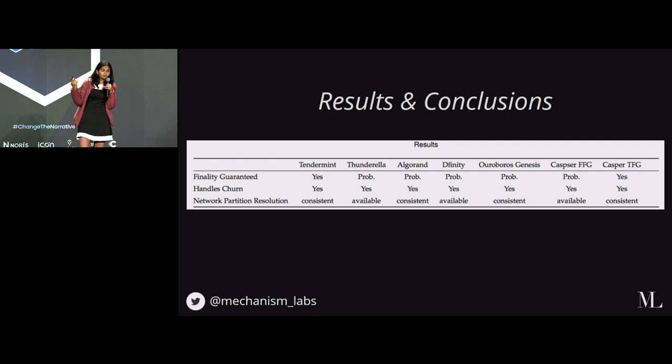In conclusion, we looked at all these different protocols across all these different parameters. The different decisions that they made in terms of network model and randomness model and other subtle things in how they went about achieving them essentially gave weight to these different results and conclusions of the protocols. Finality guaranteed basically means is achieving a finalized history a necessity in the protocol? Can the protocol tolerate forks?